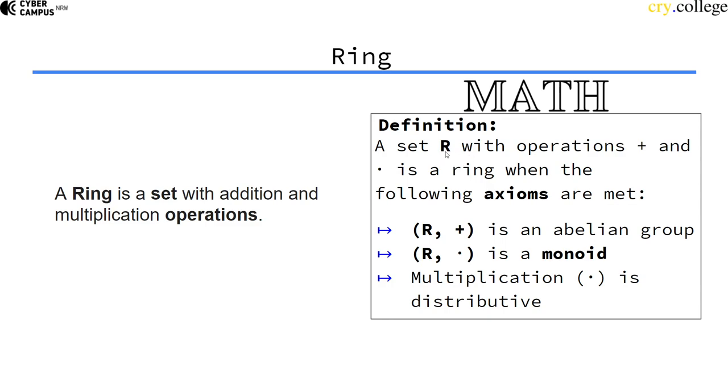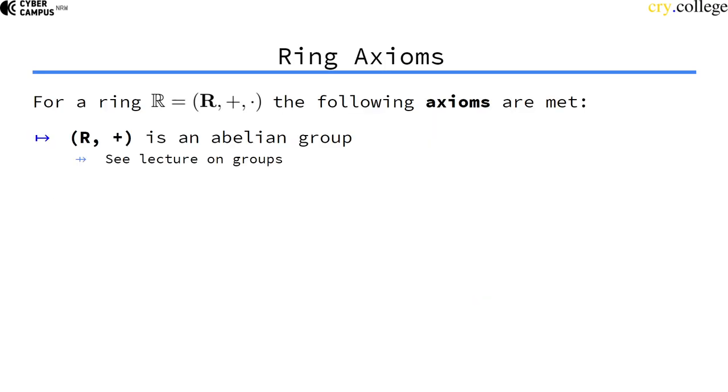We have a set with elements and plus and times operations on those elements. The axioms a ring needs to fulfill are that the set with addition is an abelian group, and R with multiplication is a monoid. The other axiom that needs to be fulfilled is that multiplication is distributive. What that means we'll see on the next slide.